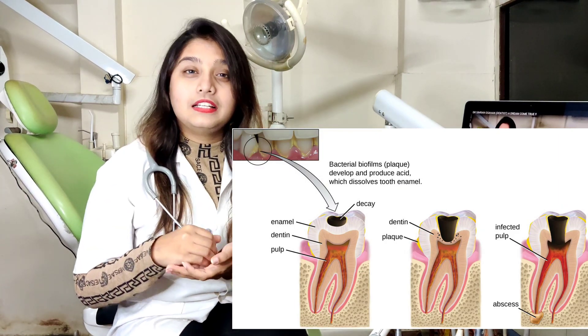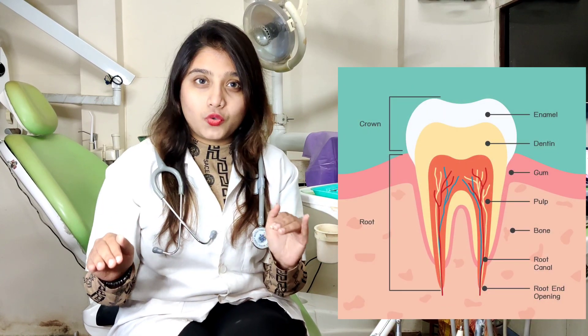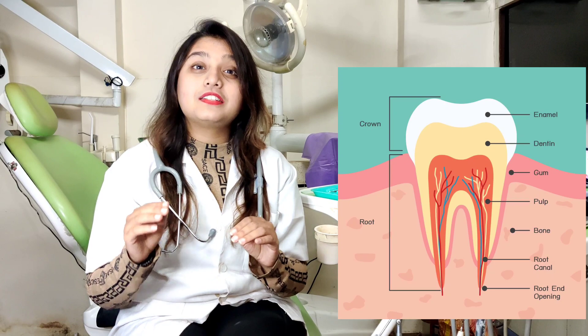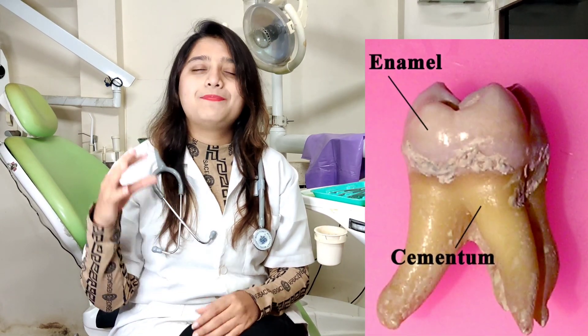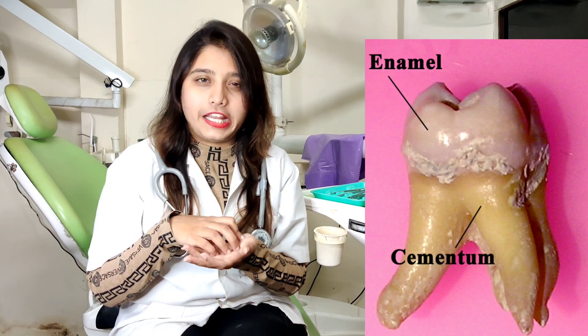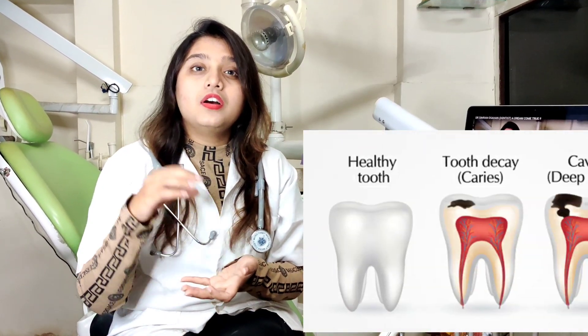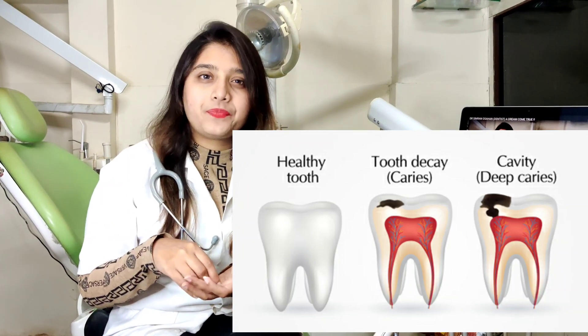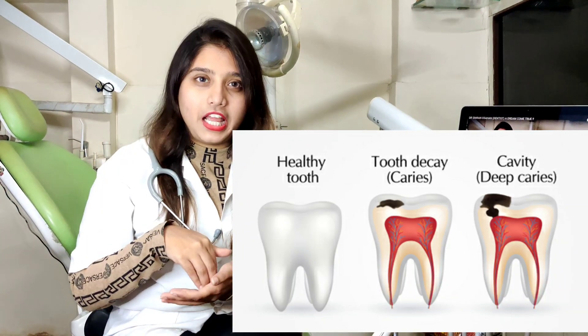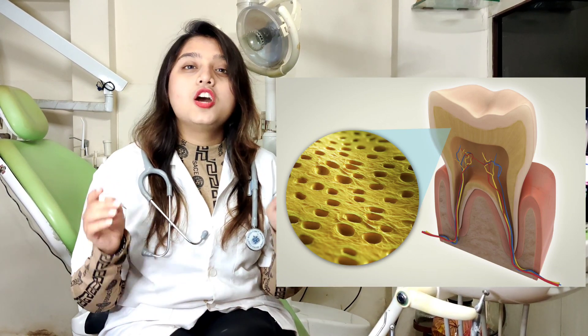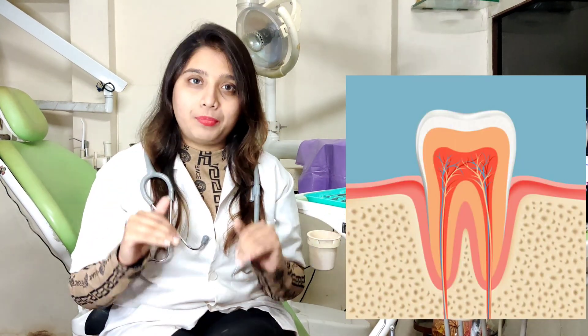This acid leads into the decalcification of the first layer of the tooth, which is called the enamel. Enamel is a crystalline structure of the tooth surface. When this bacteria accumulates on the enamel, it leads to decalcification, resulting in a hole in the tooth surface. After the cavity reaches the enamel, we have the second layer which is called the dentine. After the dentine, we have the pulp.